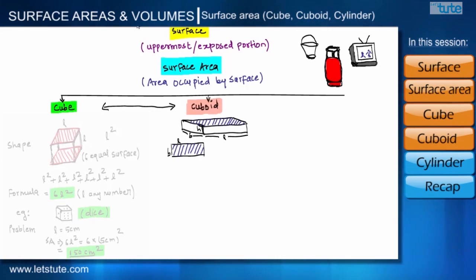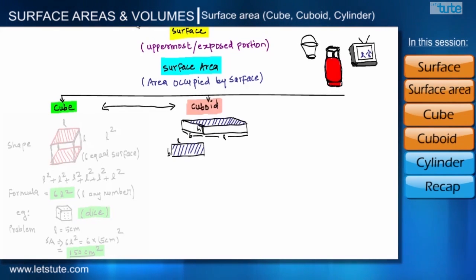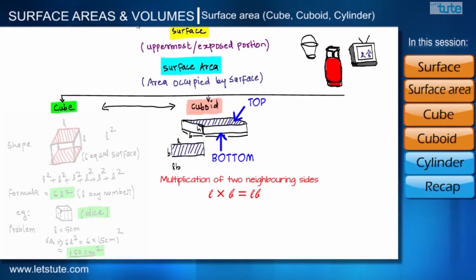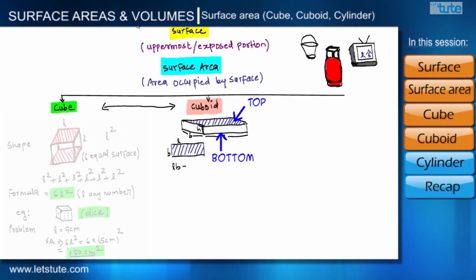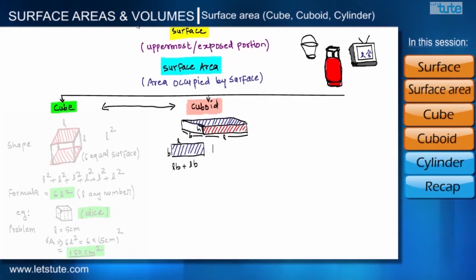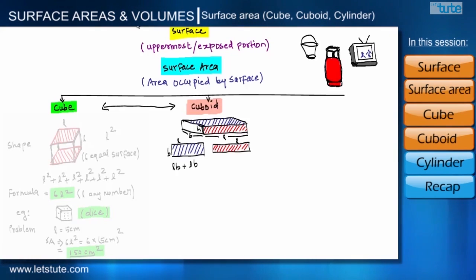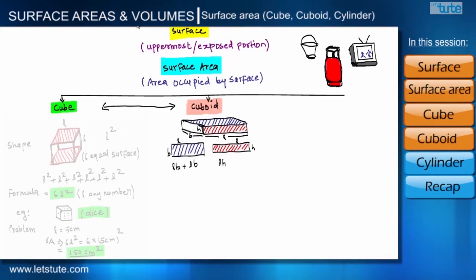Let us find the surface area of the top surface. The top surface is rectangular having two sides L and B, and the area of a rectangle with sides L and B is L into B. Since there are two surfaces — top and bottom — we add LB twice. Now for the front surface, which has length L and height H, the area is L into H.